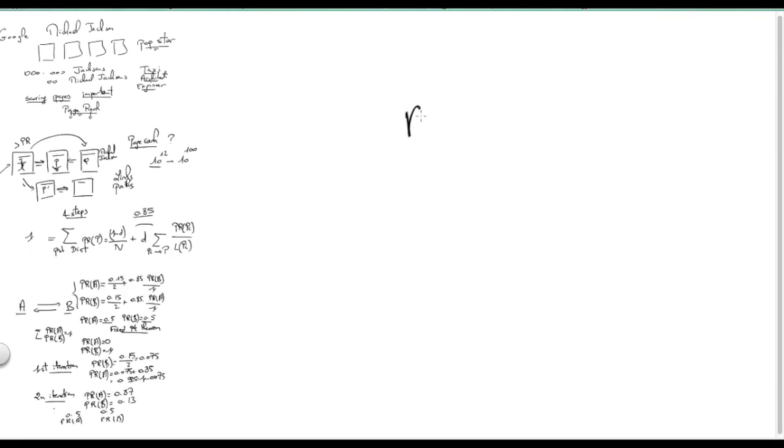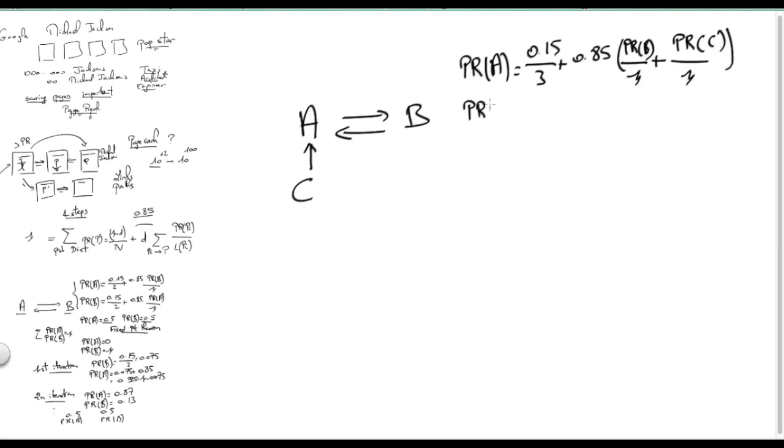So now assume a slightly more sophisticated scenario where we add another page C and assume, for instance, that C has a path to A. In this case, PR of A will be 0.15 over 3, because we consider 3 pages, plus 0.85 times the number of pages that point to A, which is PR of B, over the number of outgoing links from B, which is 1, plus PR of C, which is the number of outgoing links from C, which is 1. Same thing for PR of B, 0.15 over 3, 0.85 times the number of pages that point to B, which is PR of A times the outgoing links from A, and finally PR of C will be 0.15 over 3. No page has a path to C.